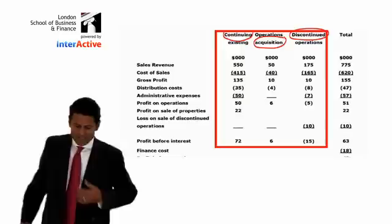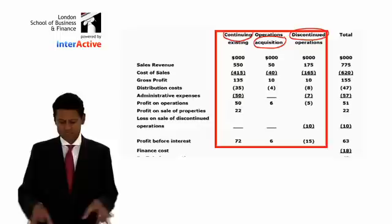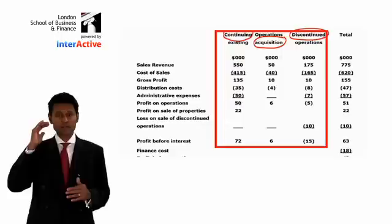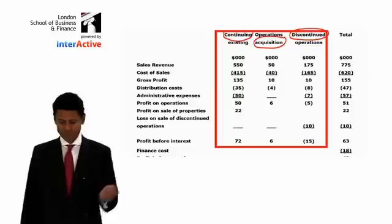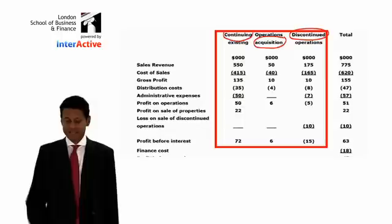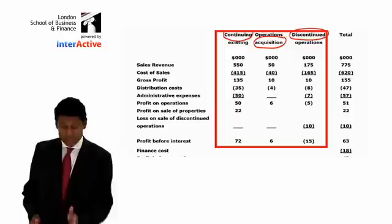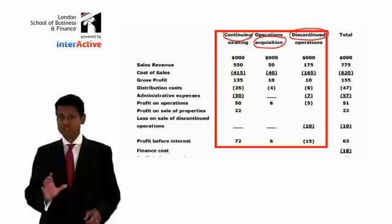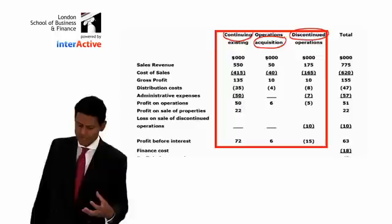I want you to think about why we have IAS 8 and what it does that the Companies Act doesn't. The first assumption in drafting this example is that the continuing activities started on the first day of the year and ended on the last day — they continued right through the year and will continue into the future. The acquisitions happened at the midpoint of the year, lasting exactly six months till the end of the year, and they continue into the future. The discontinued is the opposite — you start the year with those activities but by the end of the year you stop them.